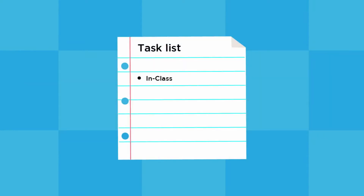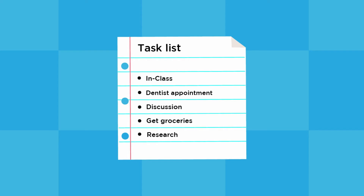Next, write down these upcoming items to create your daily task list. Don't forget to add important personal commitments, such as appointments or getting groceries. Add time estimates for each item, then prioritize using the ABC123 method, which will help you to identify the key tasks to complete that day.